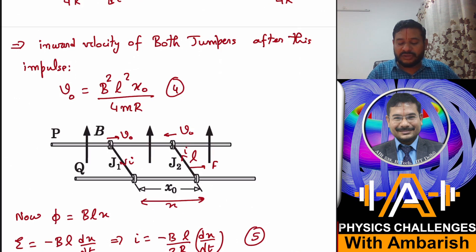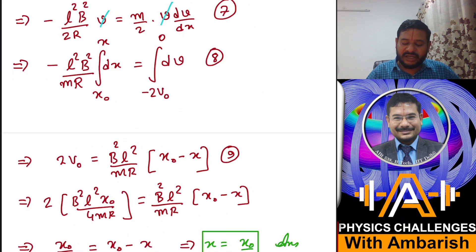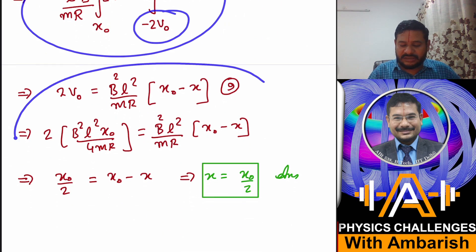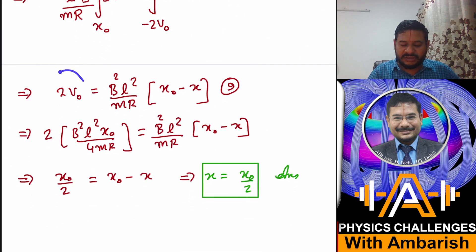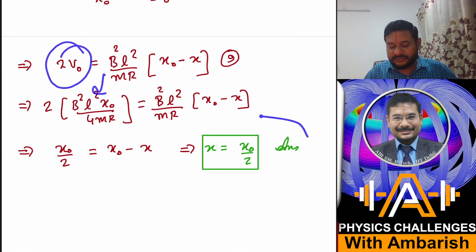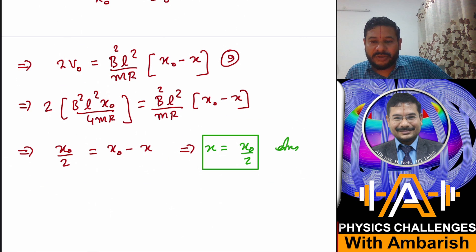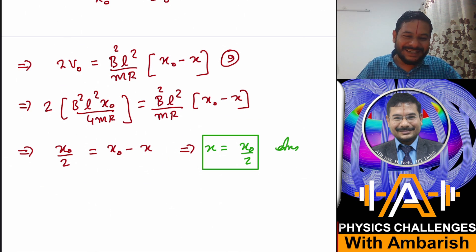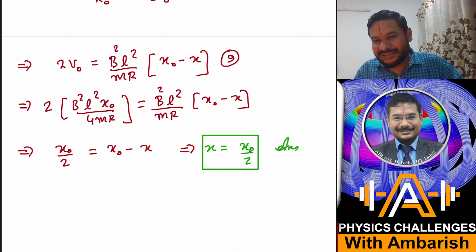Now I've just integrated this and substituted for v₀ which I had found here. Substitute this and after integrating, then a little bit of simplification - just substitute v₀ over here and integrate this, and you get the final answer and that comes out to be x equals x₀/2. So we are happy, we got the final answer and this matches with the answer given in the book.